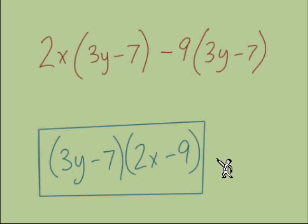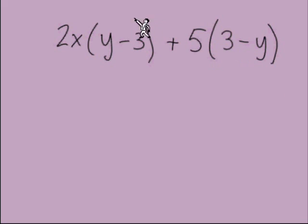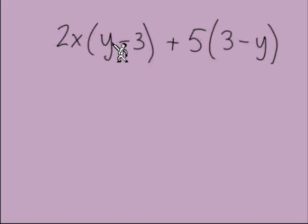Here's our next example. We have two big terms: 2x times the quantity (y minus 3), and the second term is positive 5 times the quantity (3 minus y). We focus on the quantities in parentheses — if they're the same, that's our GCF to bring out front. On the left side we have (y minus 3), but on the right side it's (3 minus y). They don't look identical — they both have a y and a 3, but we need to decide: are they the same, or are they opposites?